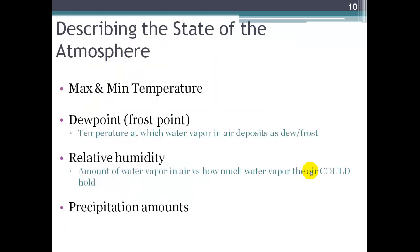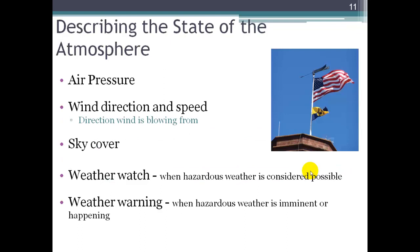When we describe the state of the atmosphere, we look at variables like the maximum and minimum temperature for a 24-hour period. The dew point, also known as the frost point. That's the temperature at which any water vapor that's in the air will condense out as dew or frost if it's freezing out. Relative humidity is a percentage value that looks at the amount of water vapor that's in air versus how much water vapor the air can hold at a particular temperature and pressure. We have precipitation amounts, air pressure, wind direction and speed, sky cover, which tells how much cloud cover there is in the sky. And if there is hazardous weather possible, the National Weather Service may issue a weather watch. And if hazardous weather has been spotted or is imminent, then a weather warning will be issued.